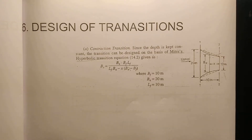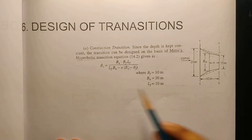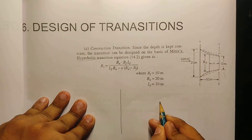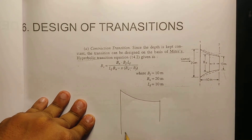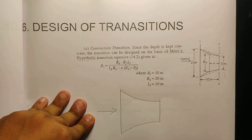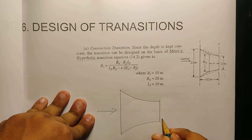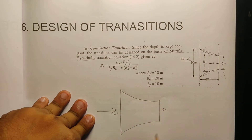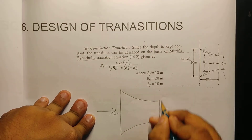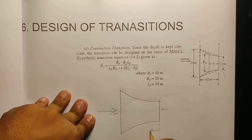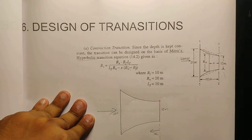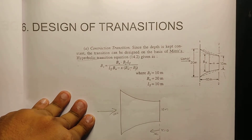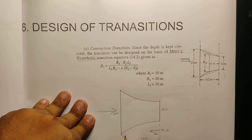We can discuss it with the Mittharas equation, Bx. Now look — this is 10 meters, and here 20 meters. If we have to show a curve, we can see this case. This is the starting point. Here is the x value. The length of the contraction transition will be 10 meters. The x value is 0 and the x value will be 10 meters.